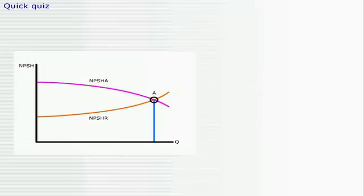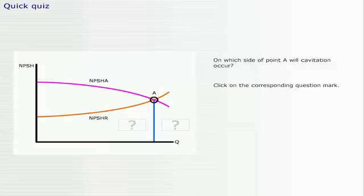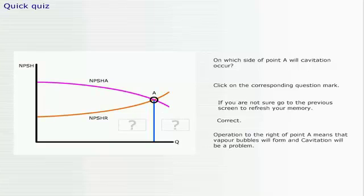It's time for a quick quiz. On which side of point A will cavitation occur? Click on the corresponding question mark. If you're not sure, go to the previous screen to refresh your memory. Correct. Operation to the right of point A means that vapor bubbles will form, and cavitation will be a problem.